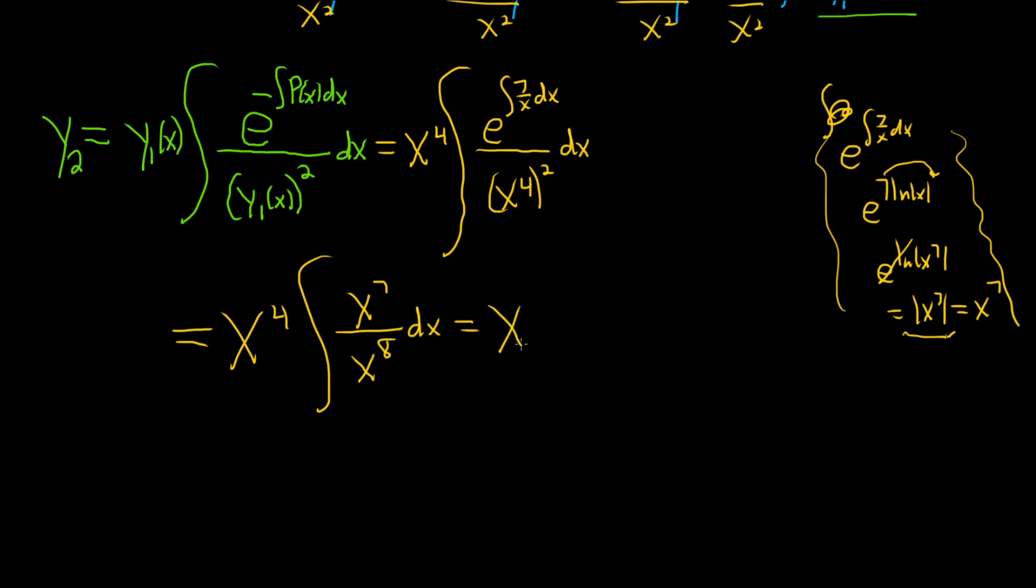So this is equal to x to the fourth times, and then 1 over x dx. And 1 over x is special. This integrates to the natural log of the absolute value of x. This is x to the fourth, natural log, absolute value of x. And again, don't worry about the plus C. And that should be our second solution.